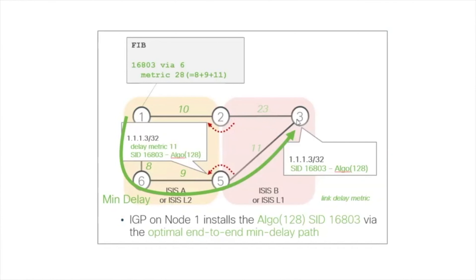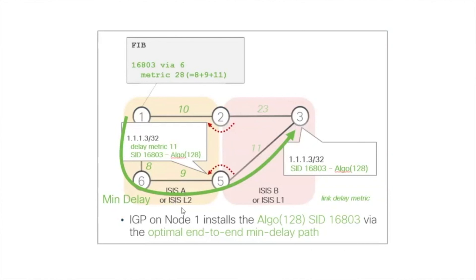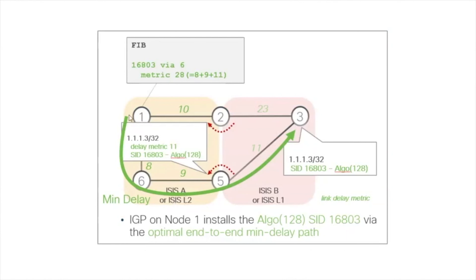The combination of leaking the prefix with the Flex Algo label and the redistribution with the Flex Algo metric will allow a router in a particular process or domain, like router number one, to select the optimum ABR — either two or five — to reach a destination in another domain or area. In this example, two processes: ISIS-A or B, or two levels, where router one is trying to reach router three along the shortest path using Flex Algo 128, minimizing delay. The optimum ABR is five, achieving a delay of 8+9+11, less than going via ABR two at 10+23.